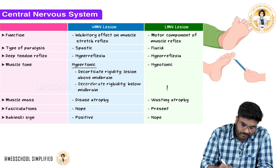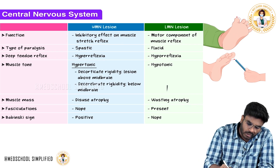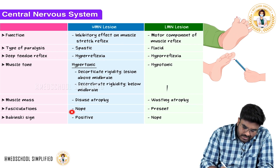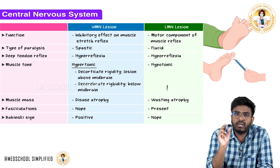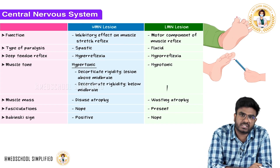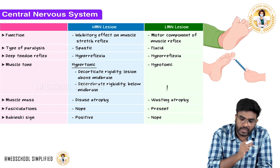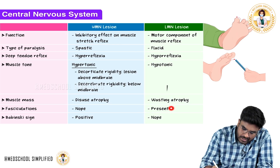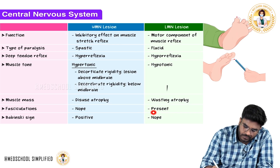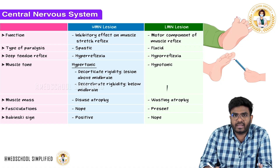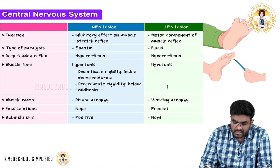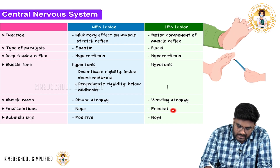Another difference: fasciculations — small twitchings or little contractions — are not seen in upper motor neuron lesions, but they are seen in lower motor neuron lesions, because the lower motor neurons fire unnecessarily, causing fasciculations.